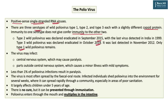The polio virus can show various symptoms. If the infection is in the central nervous system, there will be paralysis — and this paralysis is irreversible and cannot be treated. Infection outside the central nervous system results in minor illness with mild symptoms. So polio virus does not necessarily lead to paralysis. In fact, less than 1% of polio virus infections result in paralysis.